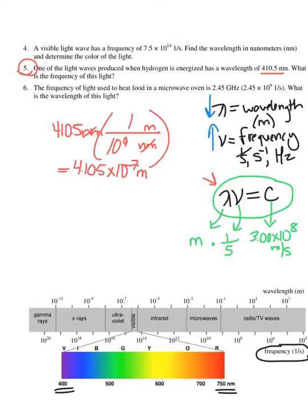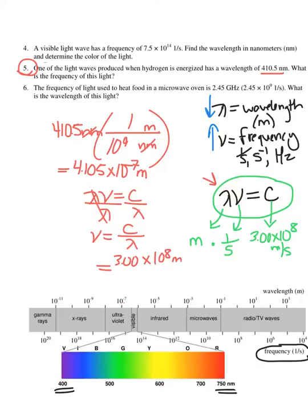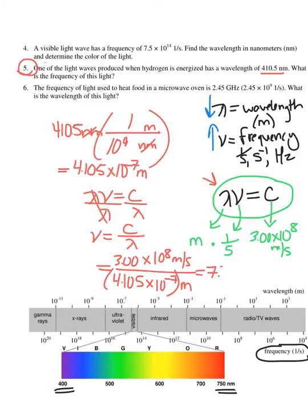I know my wavelength in meters. I know c, it's 3 times 10 to the 8th meters per second. I can solve for nu, the frequency. To solve for frequency, divide both sides by lambda, so frequency equals the speed of light divided by wavelength: 3 times 10 to the 8th meters per second divided by 4.105 times 10 to the negative 7th meters. Make sure you use parentheses around the entire denominator for correct order of operations. When I do that, I get 7.30 times 10 to the 14th, and my units — meters cancel, leaving one over seconds, which is the same as hertz.